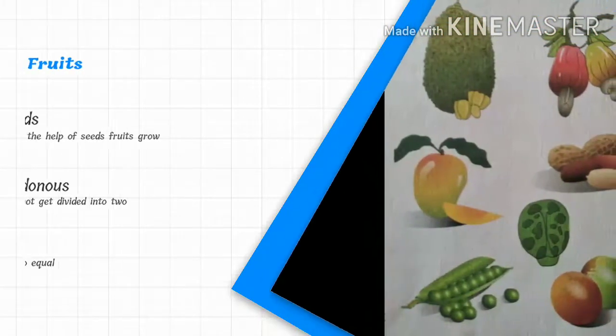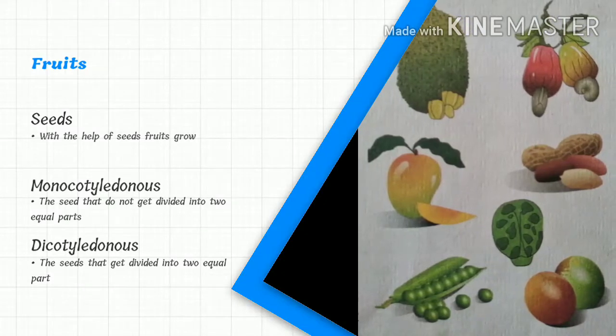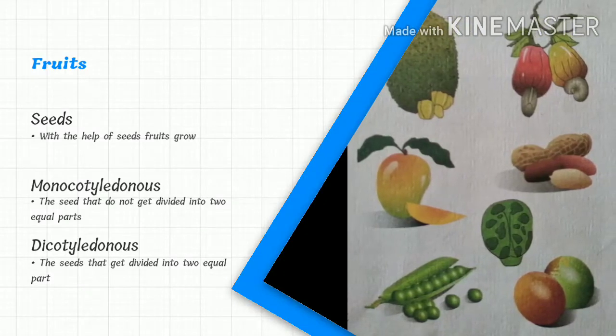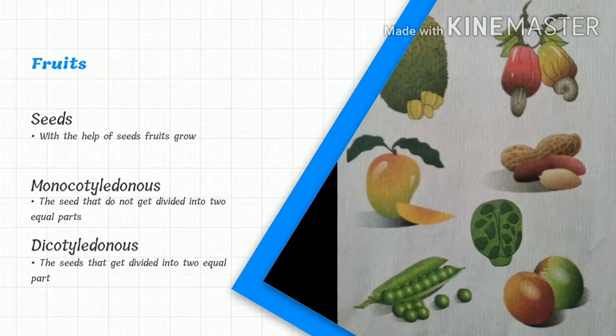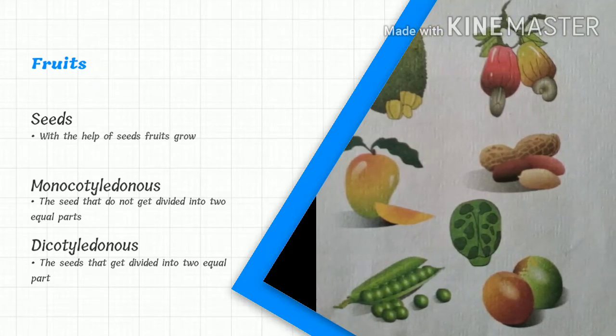Fruits: Seeds - with the help of seeds fruits grow. Monocotyledonous - the seeds that do not get divided into two equal parts. Dicotyledonous - the seeds that get divided into two equal parts.